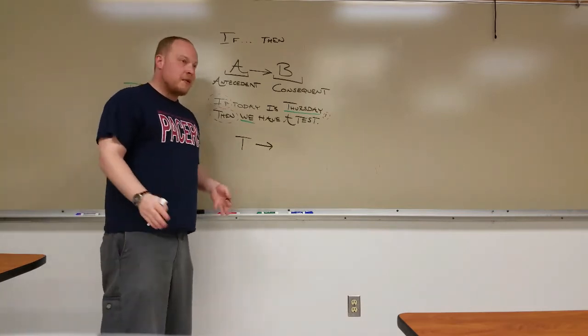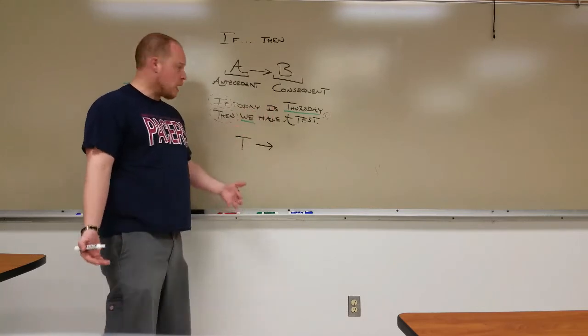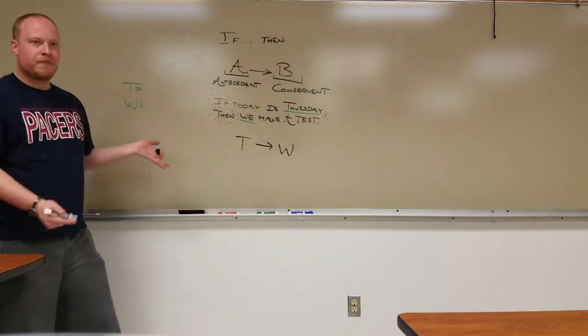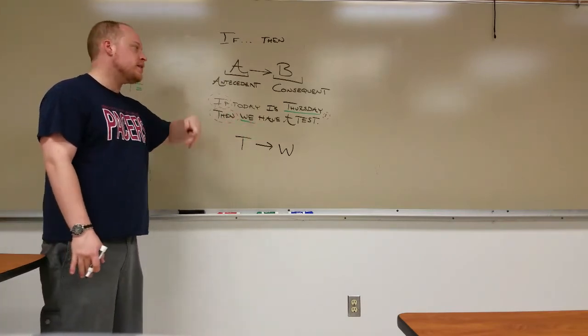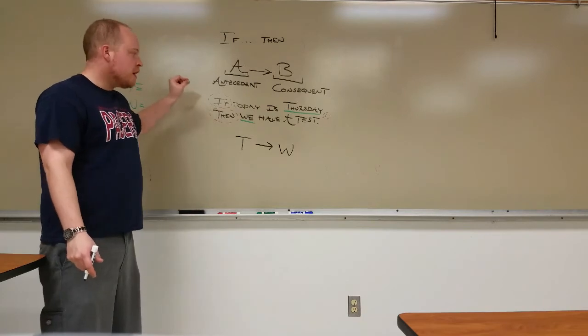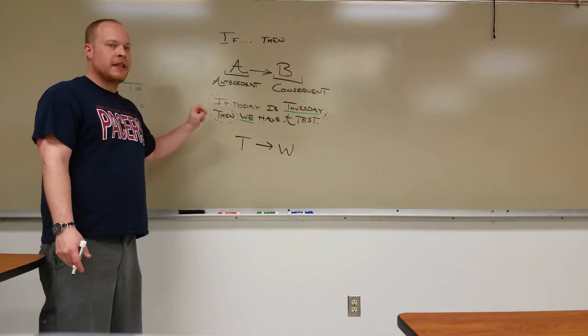And whatever follows that, pretty much whatever is left in this case, goes on the right side. So we have a test. How do we represent we have a test? That's W. T arrow W. Bam. Formal logic. T arrow W is the formal representation propositionally that we're using for the compound statement. If today is Thursday, then we have a test.